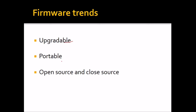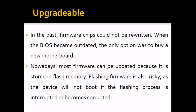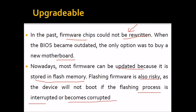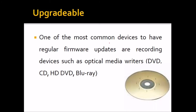Firmwares are upgradable, portable, and available as both open source and closed source. In the past, firmware chips could not be rewritten, so when the BIOS became outdated, the only option was to buy a new motherboard. Now, most firmwares can be updated because they are stored in flash memory rather than ROM. However, flashing firmware is risky — if the flashing process is interrupted or becomes corrupted, the device will not boot. One of the most common devices to have regular firmware updates are recording devices such as optical media writers: DVD, CD, HD, and Blu-ray.